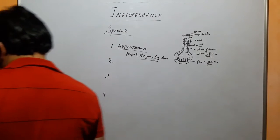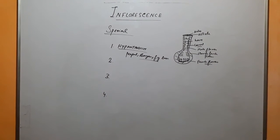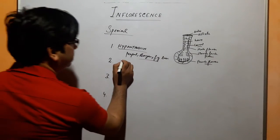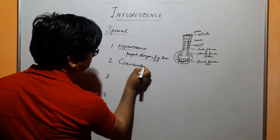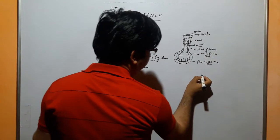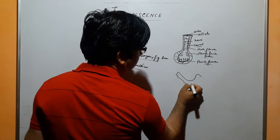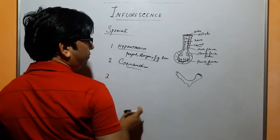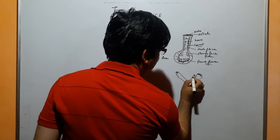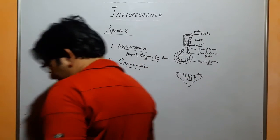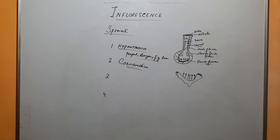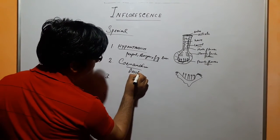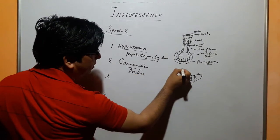Now we have one more type. That is synanthium. What happens here? Saucer-shaped receptacle or peduncle with margin not coming inside — the margin is towards outside. On this receptacle there are fertile flowers. Example: Dorstenia. This is also like hypanthodium.